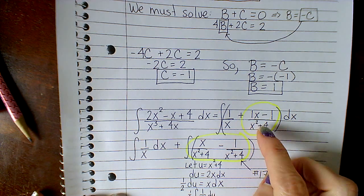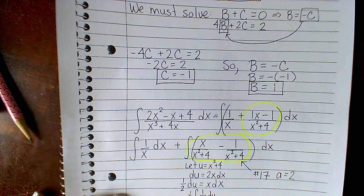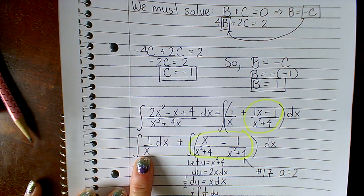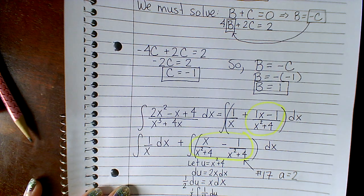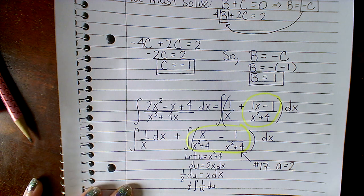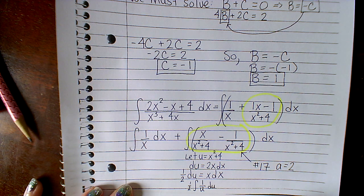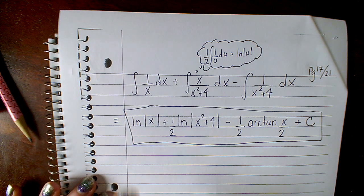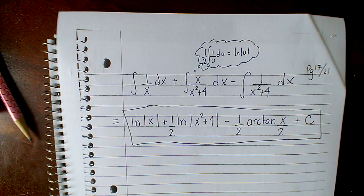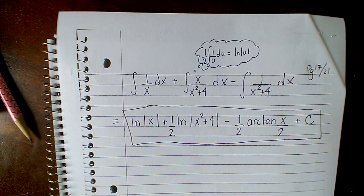I have to integrate these two now because the original question asked me to integrate that rational function. Integrating 1 over x is just a natural log. For the other term, I split it into two fractions: the first part is a u-substitution giving a natural log, and the second part is formula 17 on the formula sheet — an arctangent, or inverse tangent, where a equals 2. These problems can be extremely challenging: the partial fraction decomposition itself is a ton of work, and then you still have to integrate.